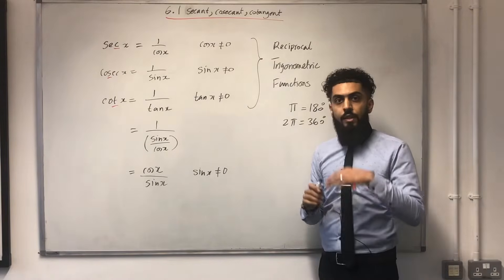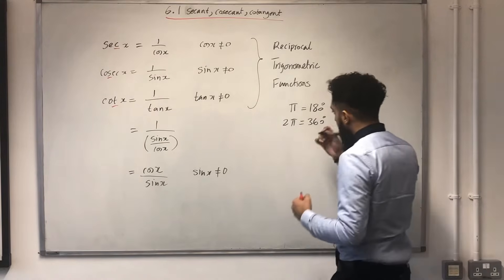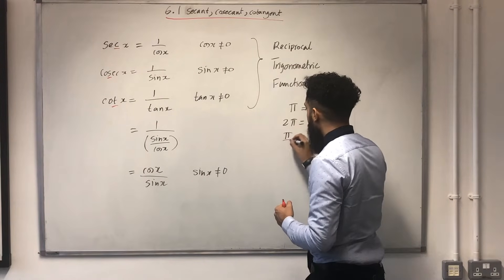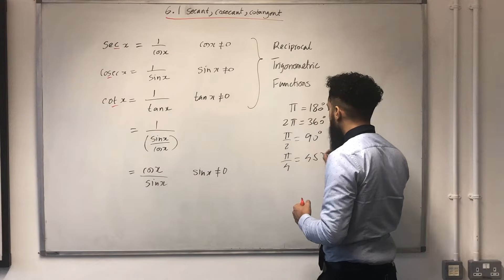I'm going to write down the very important radian degrees relationships. So, the next one I can write is π/2, which is 90 degrees. π/4, 45 degrees.